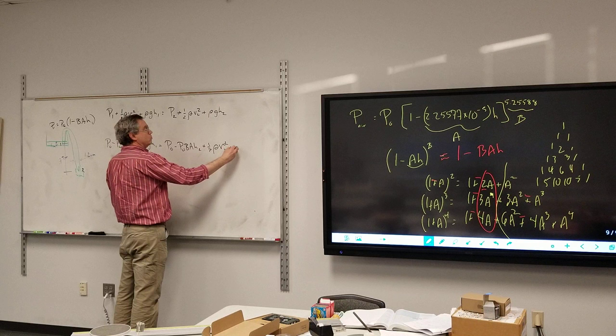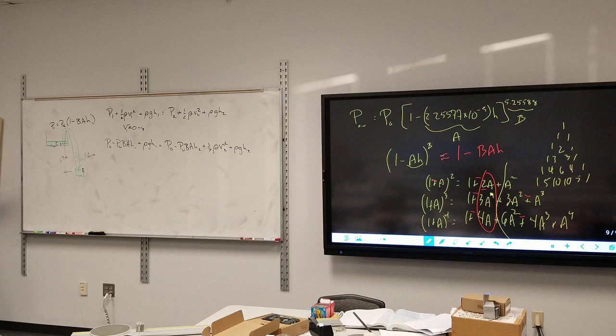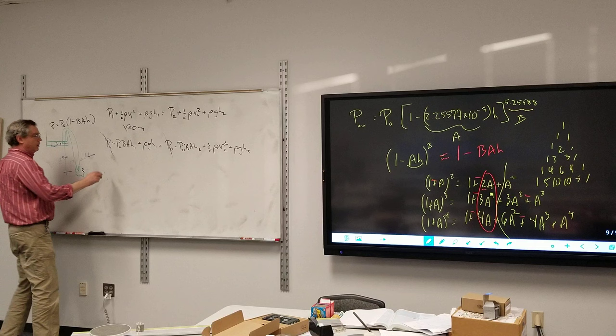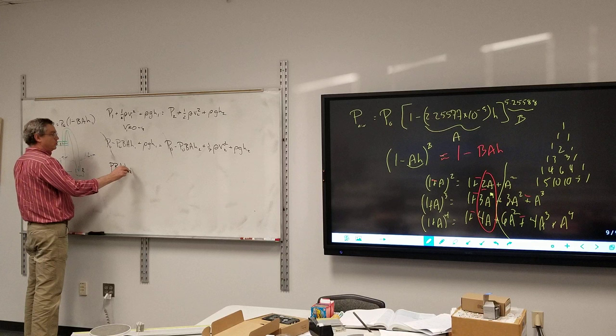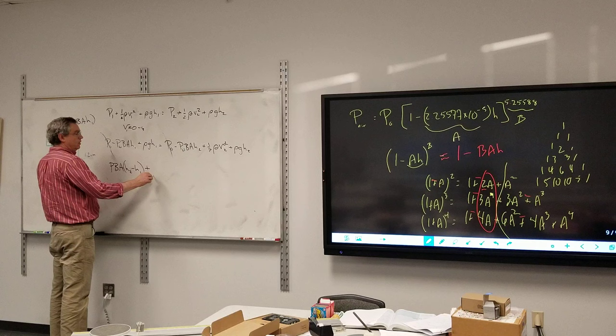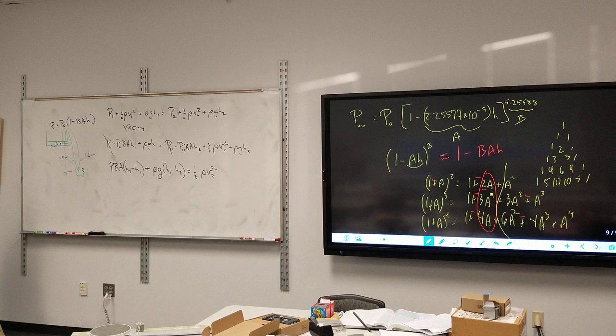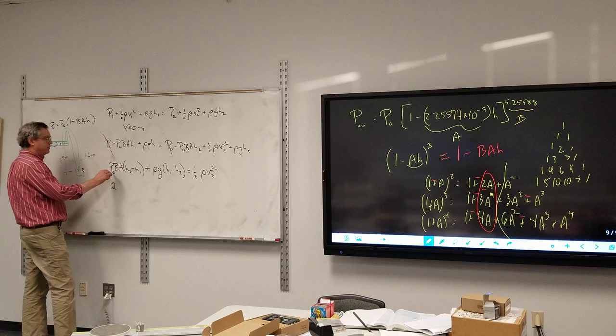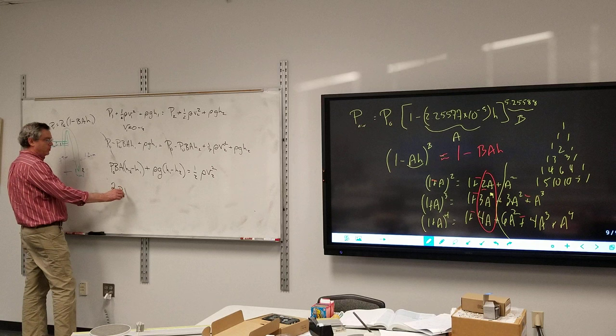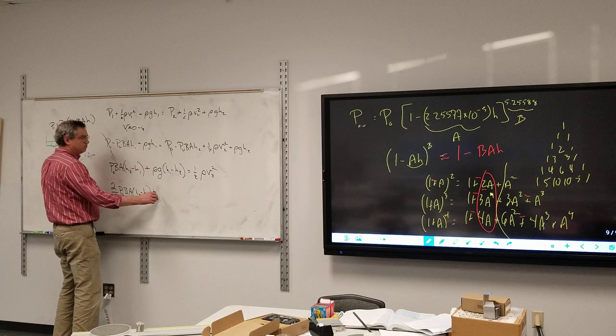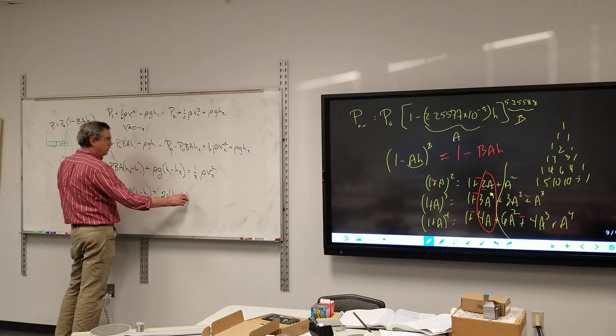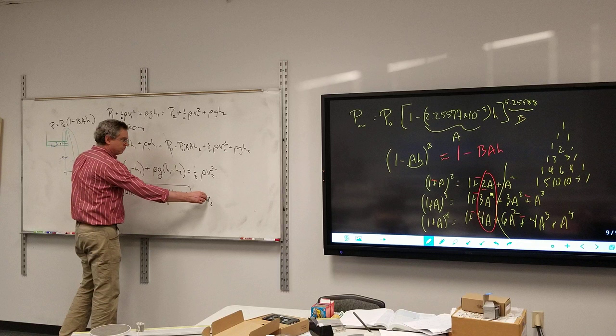Since I'm solving for V2, get everything else over here. My P0s cancel out. I'm left with P b a (h2 minus h1) plus ρ g (h1 minus h2) is equal to one-half ρ V2 squared. Multiply everything by 2 over ρ. The square root of all of that is equal to V2.